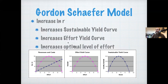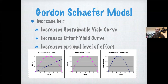If you increase R — in practice you probably wouldn't change R, but say you find out R is higher than you thought — increasing R doesn't change carrying capacity, but changes the peak of the sustainable yield curve, which changes the peak of the effort yield curve, which makes the revenue curve go up, just as if we increased price. So we work backwards: just like increasing price, increasing R raises the optimal level of effort and thus increases harvest.